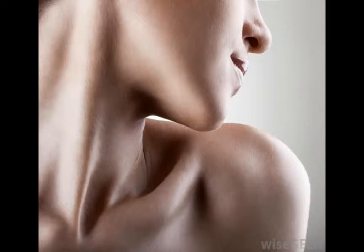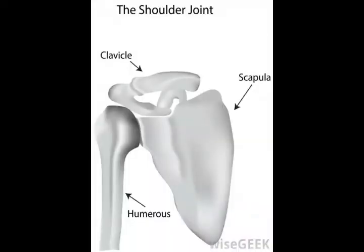When the word process is used to describe parts of bones, it means something that sticks out. The word coracoid comes from the Greek words korax, which means crow or raven, and idos, which means form. It was given that name because the projecting end of the coracoid process looks a bit like the beak of a bird.